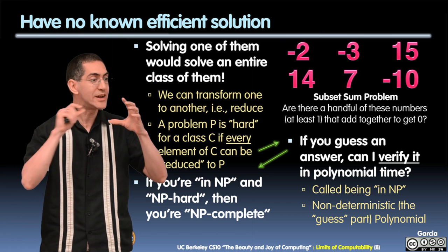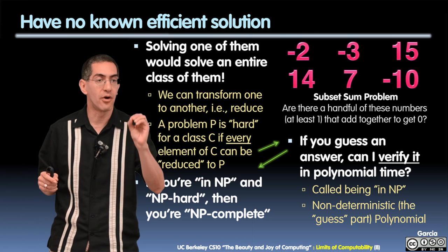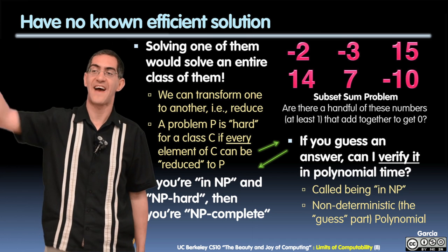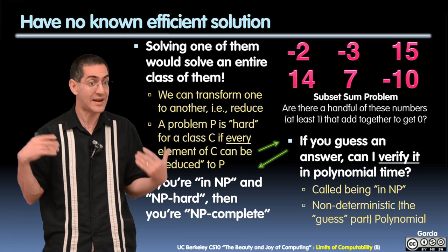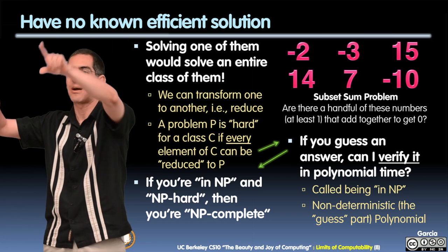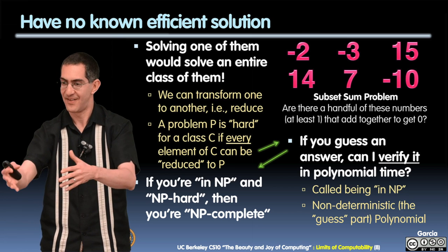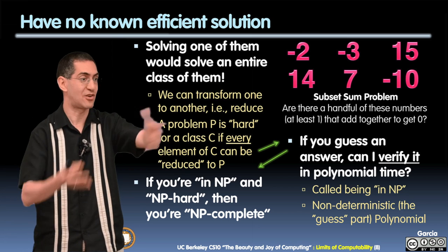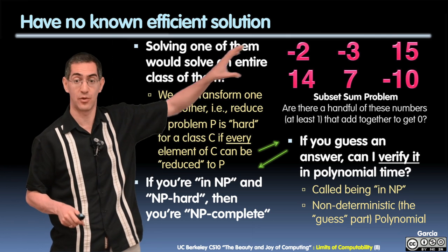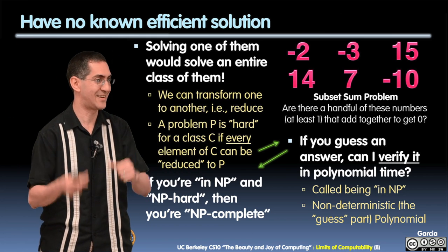NP-completeness is one of the critical ideas in CS. In fact, our department's own Richard Karp received the Turing Award — the Nobel Prize equivalent for computer science — for taking all these problems that seemed separate and proving you could reduce them all to each other. Solving one of them means it solves the whole group. That was so cool, and it happened back in the 1970s.